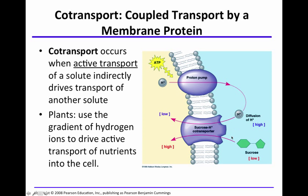Another mechanism of active transport is occurring here. Since it's active transport, something is moving against its gradient — in this case, it is sucrose. Sucrose is higher inside the cell and lower outside the cell. Using the diffusion of hydrogen ions, which are moving down their concentration gradient from high to low, energy is being utilized by the proton pump to move hydrogen ions against their gradient.